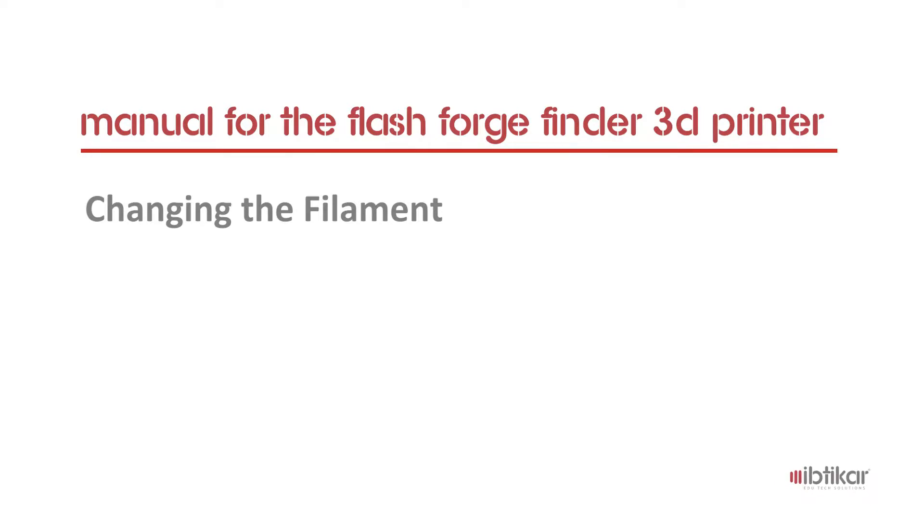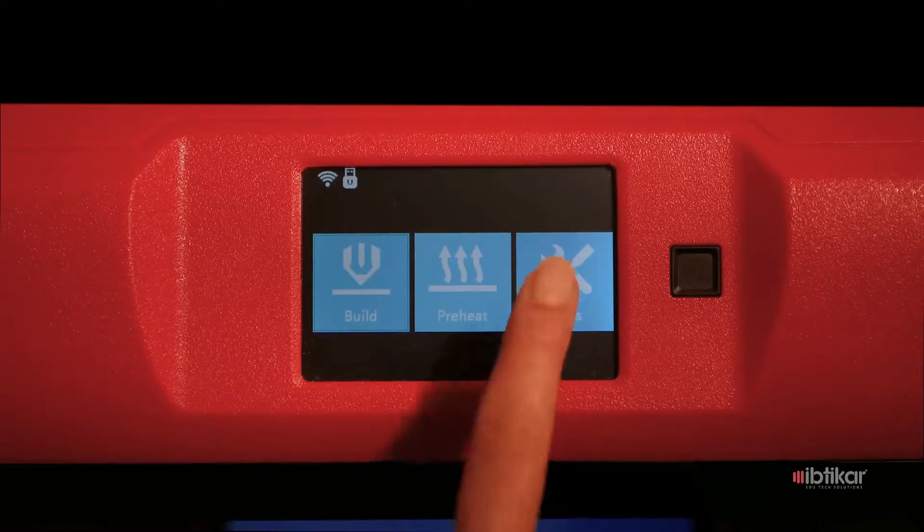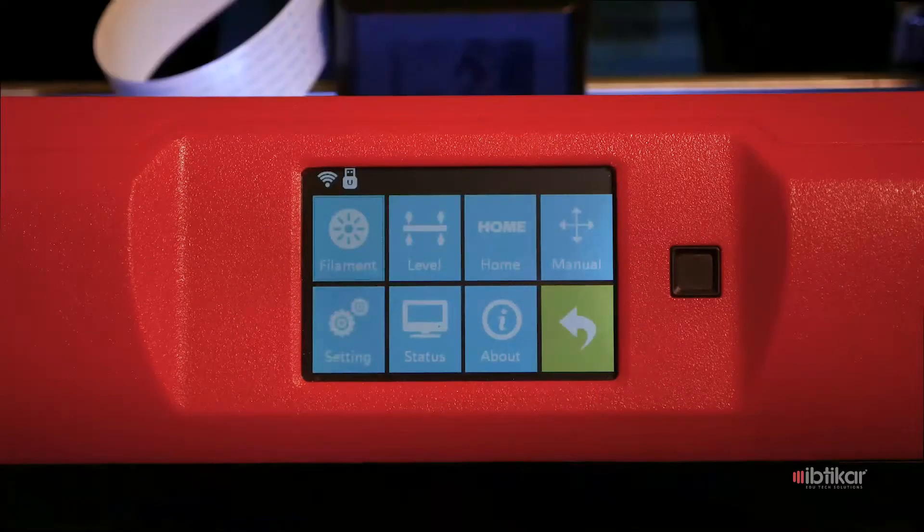Changing the Filament. Press the first button in the Tools menu. This is the Filament button.